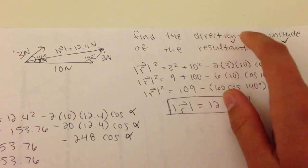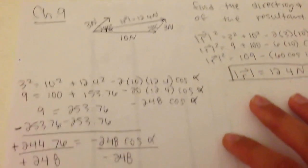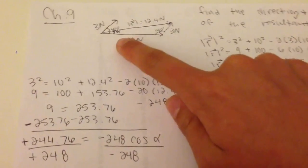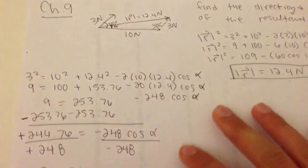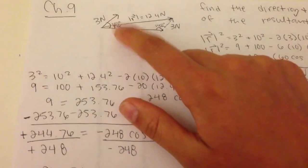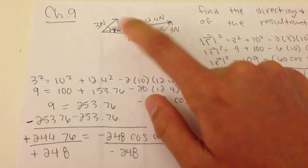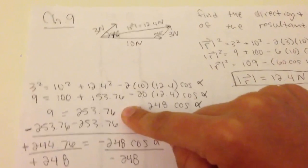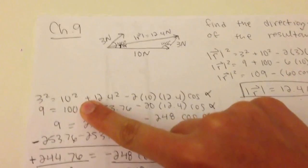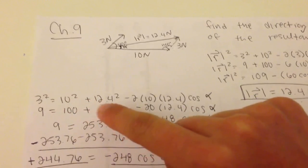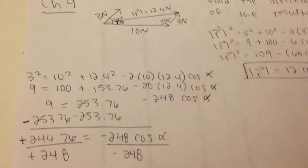So direction, magnitude we got, check. Now we need to find our direction. So now we're trying to solve for the little fish. I'm pretty sure that's alpha, not 100%, but we're trying to solve for the fish. So since we're using the fish as our angle, we're looking across at the three newtons because we want to correlate when we use law of cosines across from each other. So 3 squared equals 10 squared plus 12.4 squared minus 2 times 10 times 12.4 times cosine of the fishy.